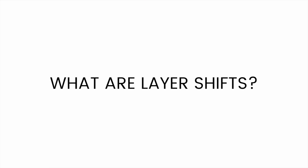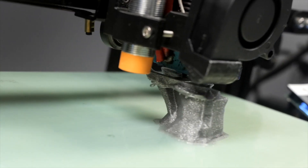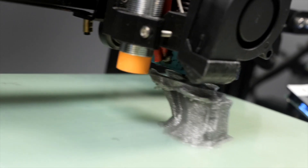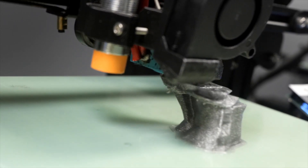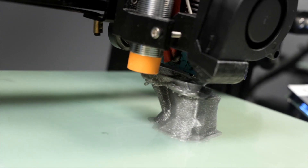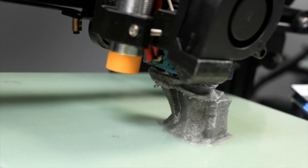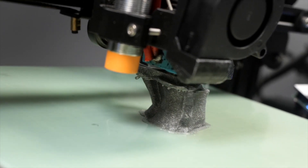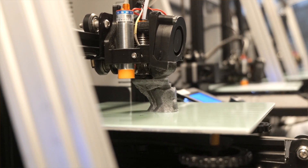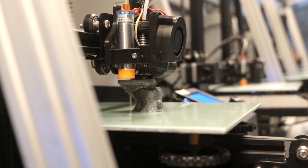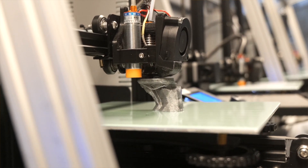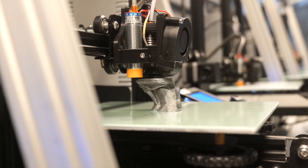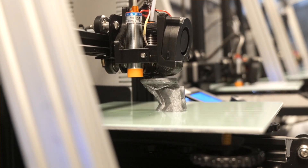A layer shift is a misalignment between your layers. When your 3D printer is printing and at some point a motor loses its position, your print will be shifted in some direction in the X or Y direction — that's what we call a layer shift. A layer shift can be minor or severe, and in severe cases it'll look like there's spaghetti and drooping on one end, and on the other you'll see exposed infill from the previous layers.